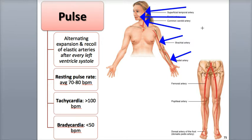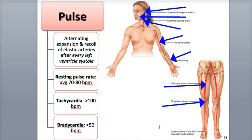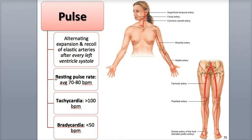In the lower body, the femoral artery of the thigh, the popliteal artery of the posterior knee, and the dorsalis pedis artery of the foot. The resting pulse rate is usually similar to the resting heart rate.